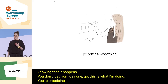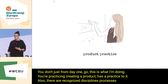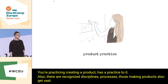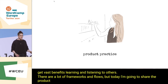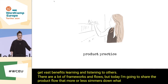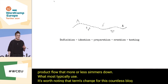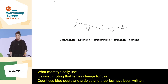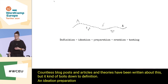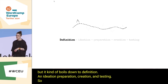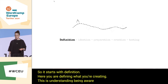Creating a product has a practice to it also. There are recognized disciplines and processes. Those making products also get vast benefits from learning and listening to others. There are a lot of frameworks and flows, but today I'm going to share the product flow that more or less simmers down to what most typically use. It's worth noting that terms change for this, but it kind of boils down to: definition, ideation, preparation, creation, and testing.